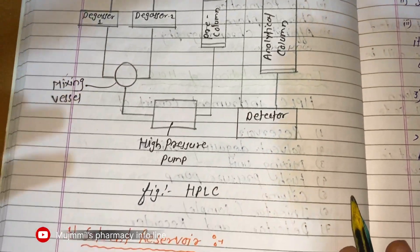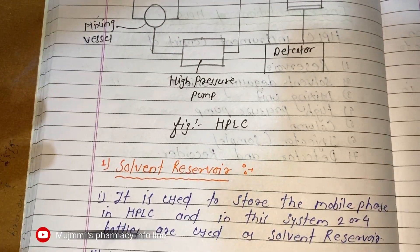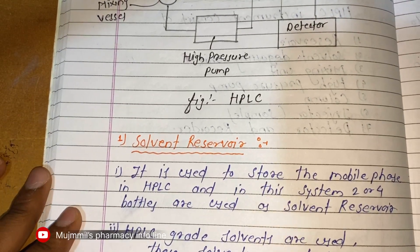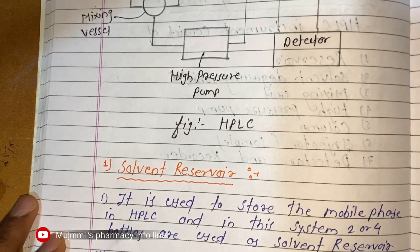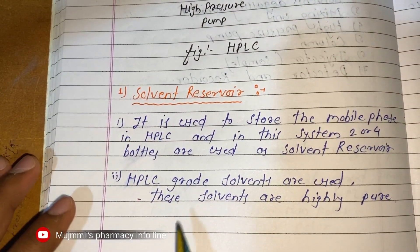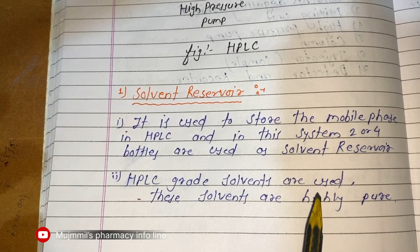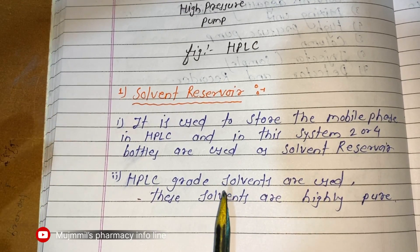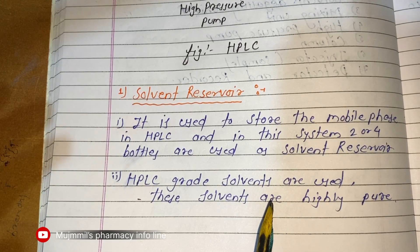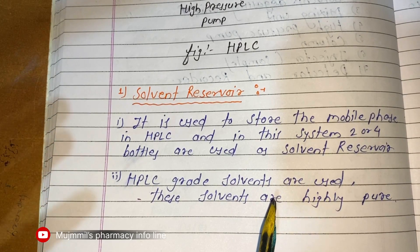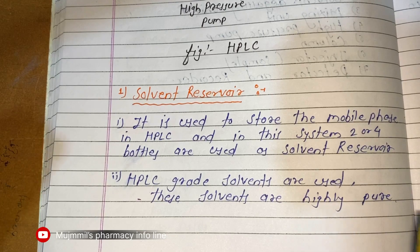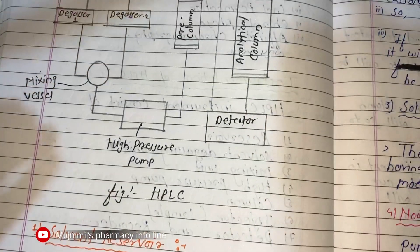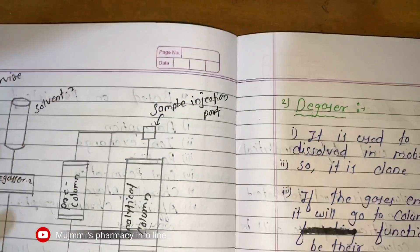The solvent reservoir is used to store the mobile phase in HPLC. Two or four bottles are used as solvent reservoirs. HPLC-grade solvents are used because they are highly pure. If you do not use HPLC-grade solvent, there may be problems with the HPLC instrumentation. Therefore, it is recommended to use HPLC-grade solvents, as these are highly pure solvents used in the laboratory.